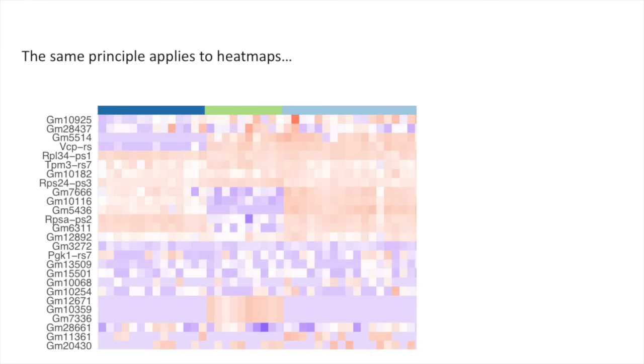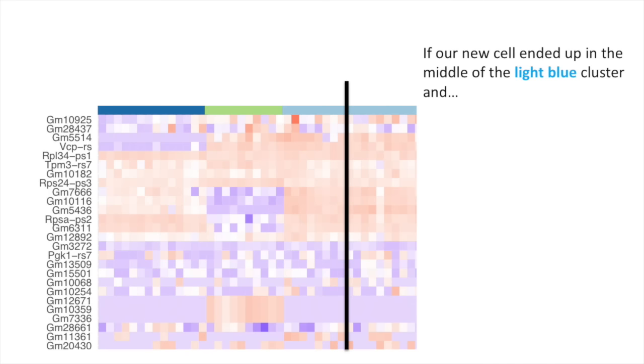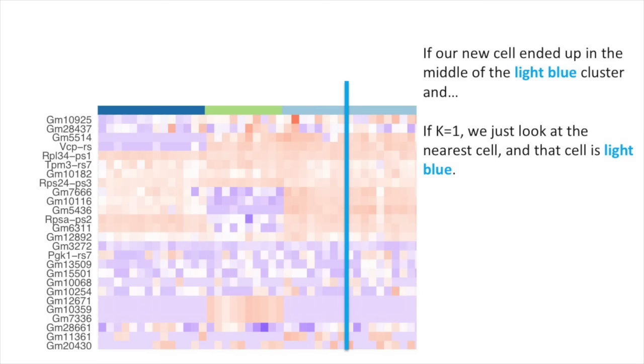This same principle applies to heat maps. This heat map was drawn with the same data and clustered using hierarchical clustering. If our new cell ended up in the middle of the light blue cluster and if K equals 1, we just look at the nearest cell, and that cell is light blue. So we classify the unknown cell as a light blue cell.